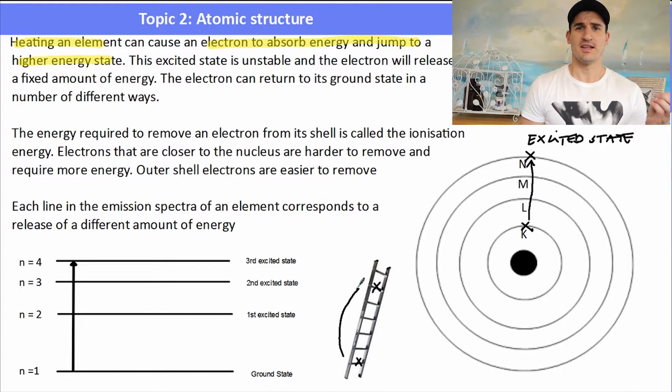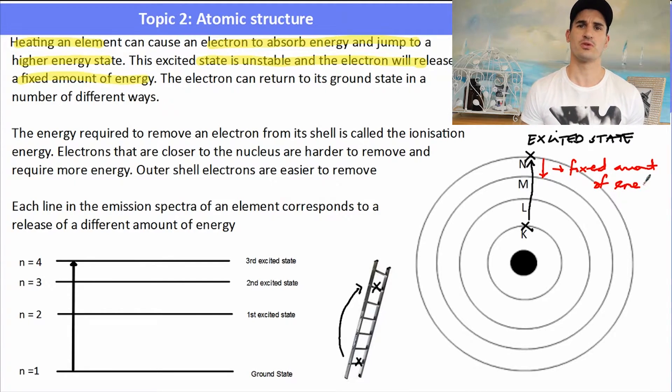Think of it like a ladder. The electron has just climbed the ladder, it's gone up the ladder, so it's now got more energy. The only way this unstable electron can get rid of the energy is in the form of light and it can jump down its shells in a number of different ways. It might jump from the fourth shell to the third shell and release a smaller fixed amount of energy or it could jump from the fourth shell back to the first shell, which would release more energy. Every time it jumps from one shell to the other, it releases a fixed amount of energy.